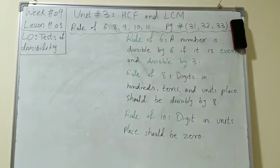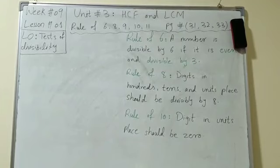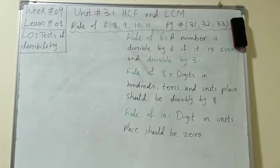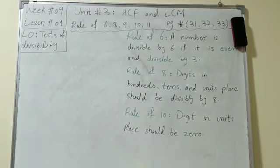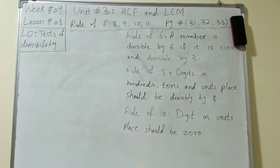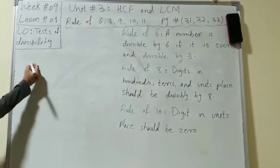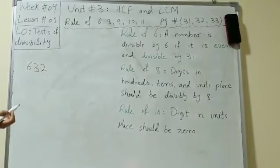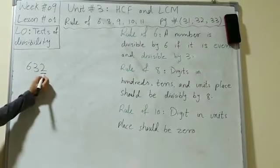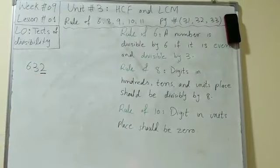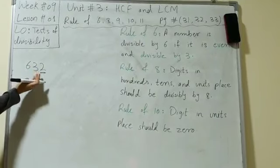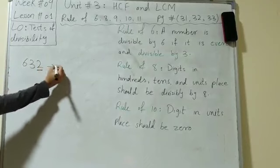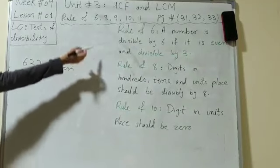A number is divisible by 6 if it is even and divisible by 3. For the rule of 6 there are two conditions. First, the given number should be even. For example, if I take the number 632, the units place value should be even — it is 2, so the whole number is even.